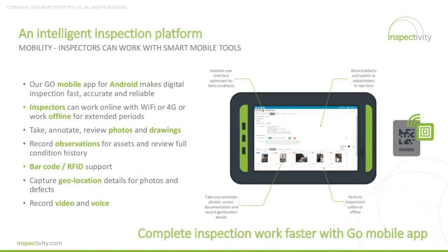Mobility is the cornerstone of efficiency and is required to support real-time decision making. The platform provides a mobile application called Go, designed for the Android ecosystem. The application allows inspectors to work both on or offline — to record results according to the templates configured by power users, take photos with validation on quantity, view additional documentation such as isometric or general arrangement drawings, and annotate those drawings with markup of where defects are located, as well as marking up photos with additional information for engineering downstream. We also support scanning of barcode labels and RFID, recording geolocation information on photos and defects, and support for video and voice.